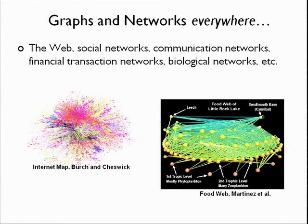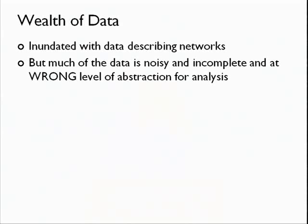One of the things that's interesting about these pictures is that there's a fair amount of work involved in even constructing the pretty picture. For example, to get an internet map you have a bunch of trace route information you need to line up to get the graph. In food webs there's a lot of work figuring out the right level of abstraction. While we have a wealth of data describing networks, a lot of the data is noisy, incomplete, and at the wrong level of abstraction for analysis.